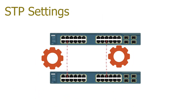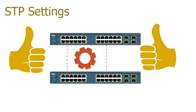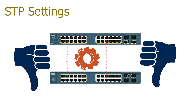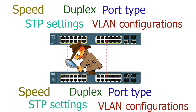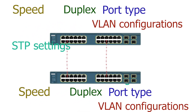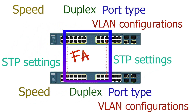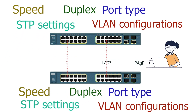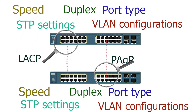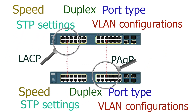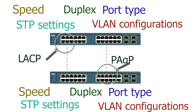Finally, we need to match STP parameters on all ports. If two ports have different STP configurations, we cannot add them to the same EtherChannel. If we manually configure an EtherChannel, we need to check these parameters ourselves. If any parameter does not match, the EtherChannel will not work. If we use LACP or PAGP, it automatically checks these parameters on ports before adding them to the EtherChannel.